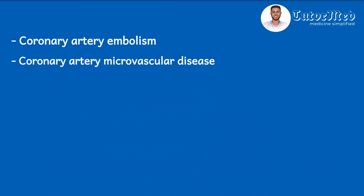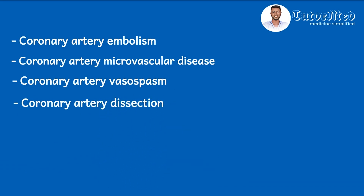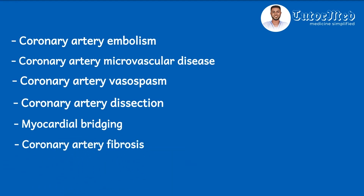Apart from atherosclerosis, other pathologies of the coronary artery which can result in myocardial ischemia include: an embolus in the coronary artery blocking the lumen; coronary artery microvascular disease; vessel wall spasms without obstruction within the lumen; coronary artery dissection in association with aortic dissection; myocardial bridge, where the artery passes through the myocardium and gets compressed during contraction; coronary artery fibrosis, which reduces the lumen through scarring; and coronary arteritis, which is inflammation of the artery walls.